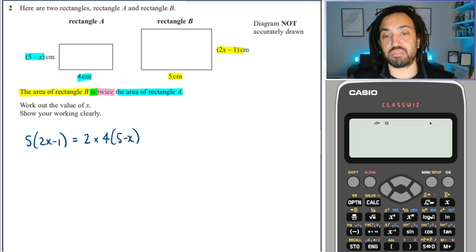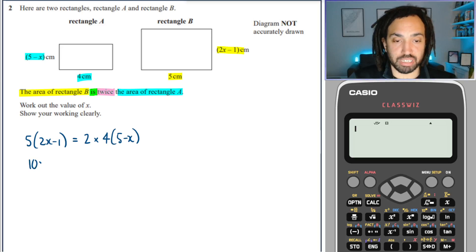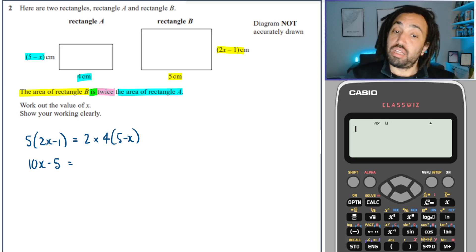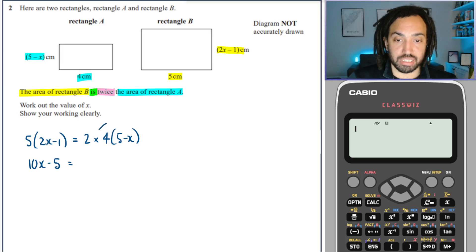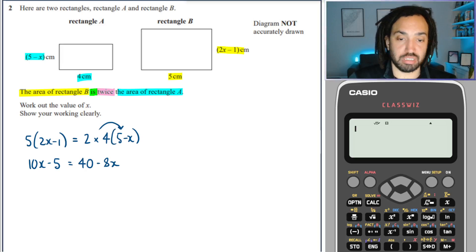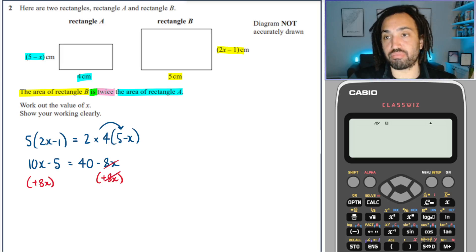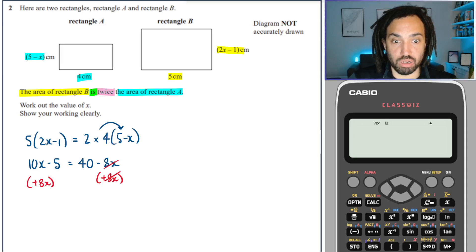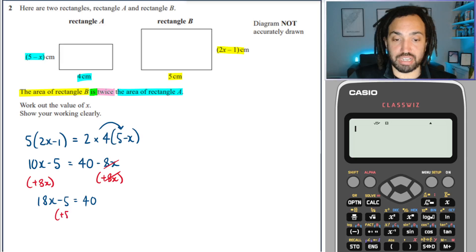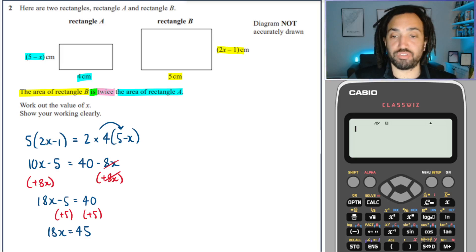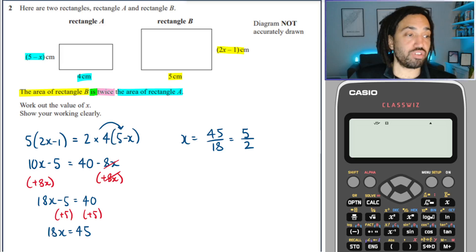Multiply the brackets — 2 times 4 is 8, so I'm basically multiplying this bracket by 8, which gives me 40 minus 8x. What's the smallest x? It's minus 8x, so let's add 8x to both sides — cancel, cancel. This gives me 18x minus 5 is equal to 40. I want to isolate the x, so add 5 to both sides. 18x is equal to 45, so the final step is to divide through by 18. I can take out a factor of 9, so 5 over 2 is my final answer.